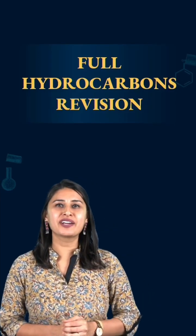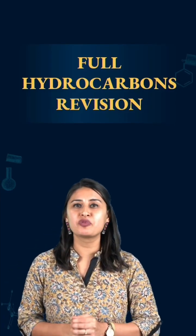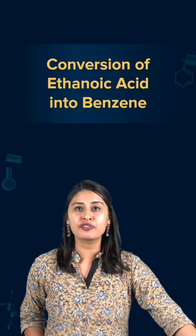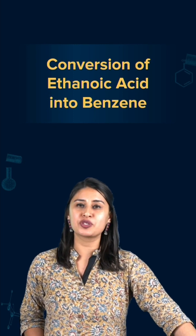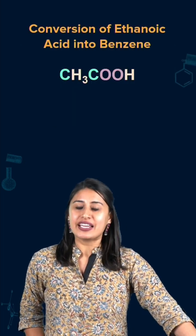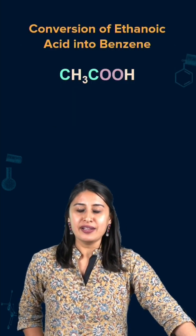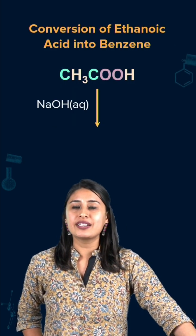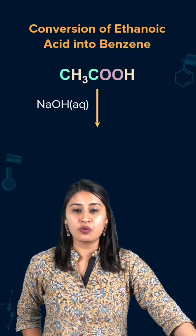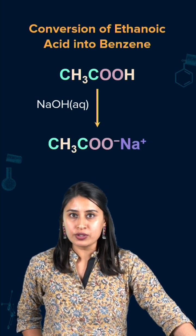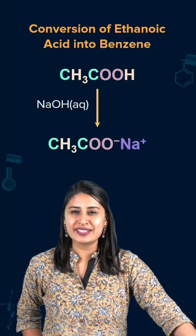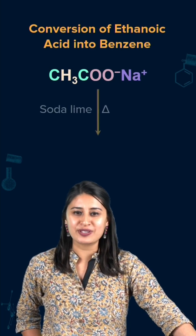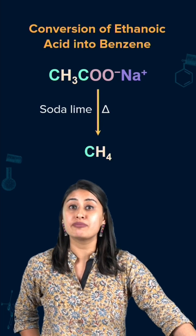Let's revise the entire hydrocarbons in one minute by carrying out this conversion of ethanoic acid to benzene. Starting with ethanoic acid, we add sodium hydroxide aqueous to get the sodium salt of the carboxylic acid. Now we can do decarboxylation so that we get methane.